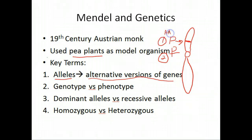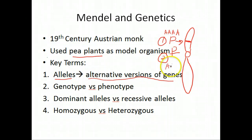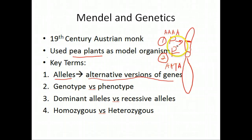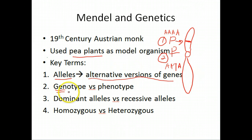An allele is a different version of a gene. You'll see instances where we represent some alleles by capital letters and some by lowercase letters — so big P is one allele or version of a gene, and lowercase p is a different allele. What distinguishes these alleles is the different genetic sequences. For example, one sequence might be AAAAA for one allele, whereas a change — a mutation — like AATA creates the other allele.